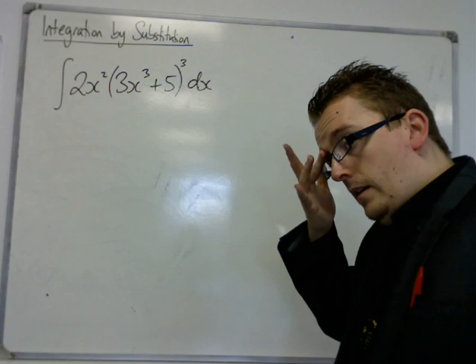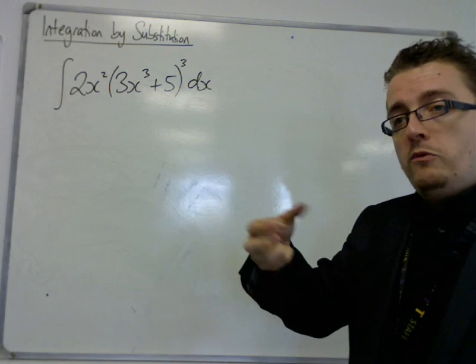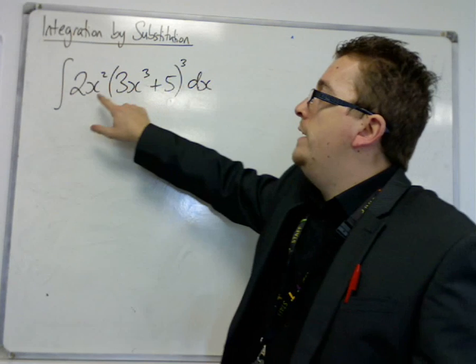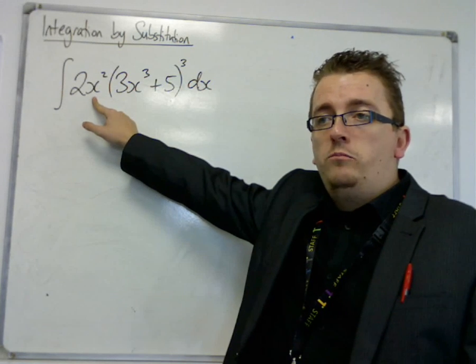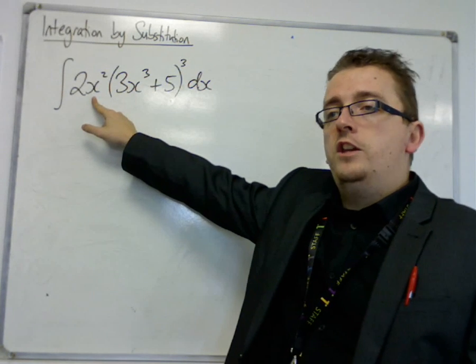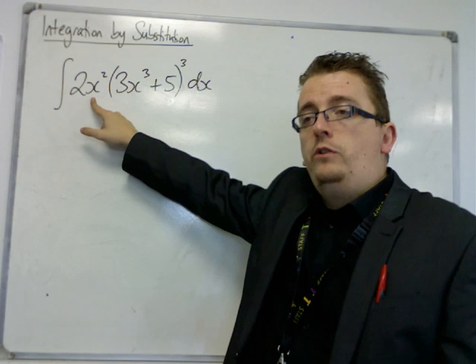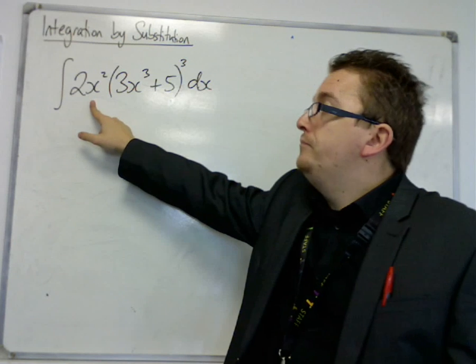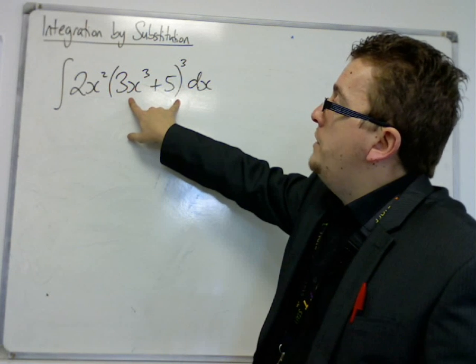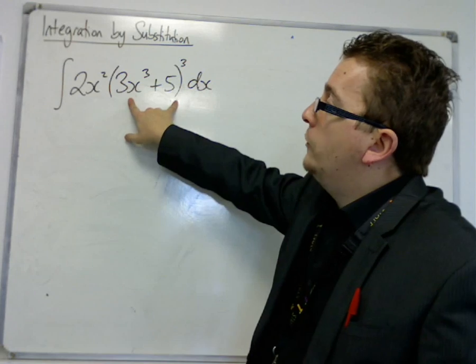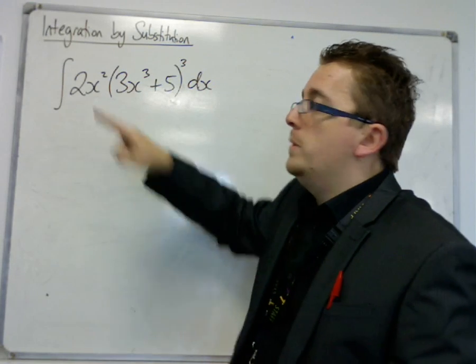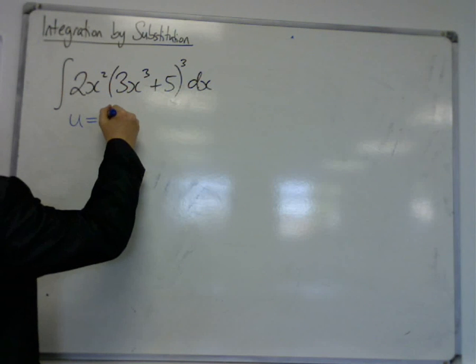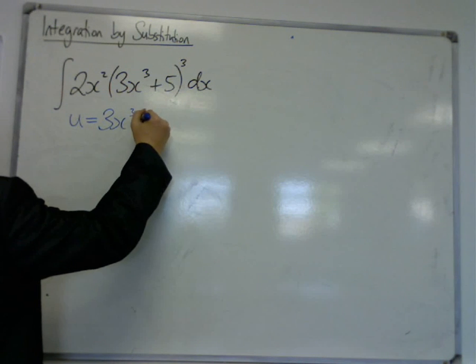remember, when we're doing reverse chain rule, you look at what is inside the bracket. If you differentiate that and it's close to what's outside of the bracket, then we can use backwards chain rule. And likewise, you can use integration by substitution. They work in the same way. So 3x^3+5 differentiated is 9x^2, which is almost what we have on the outside. So the replacement, the substitution, will be this 3x^3+5.